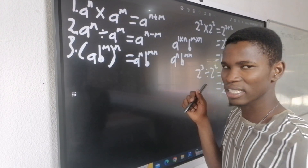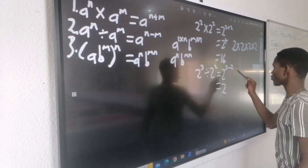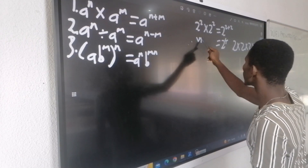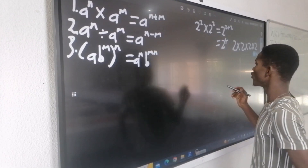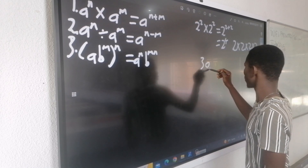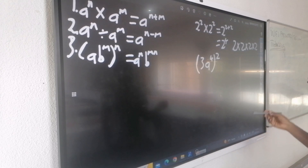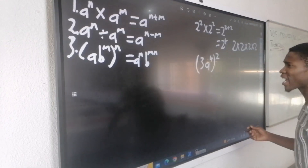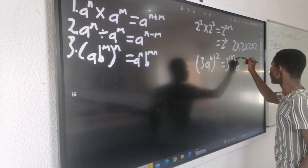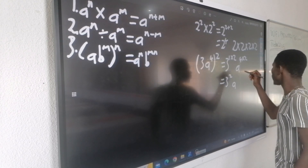Always, anything outside the brackets multiplies everything inside the brackets. For example, (3a⁴)². That exponent of 2 is going to affect everything inside. The 3 has an exponent of 1 multiplied by 2, giving 3². And a to the power of 4 multiplied by 2 gives a to the power of 8. So 3 to the power of 2 means 3 times 3, which is 9. My answer will be 9a⁸.